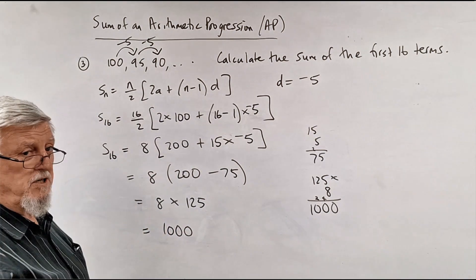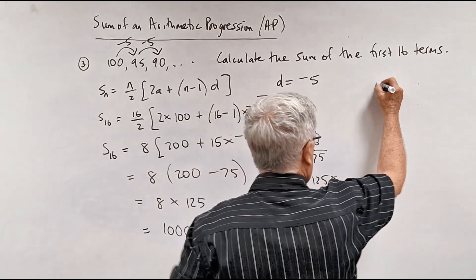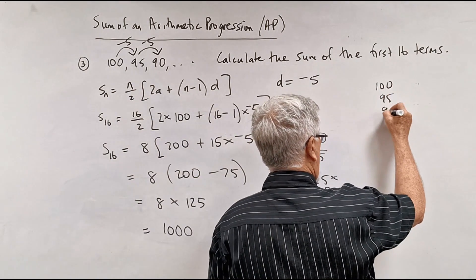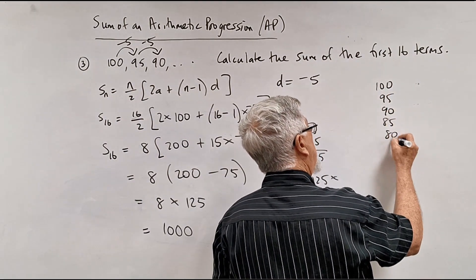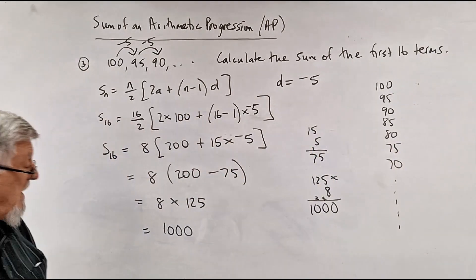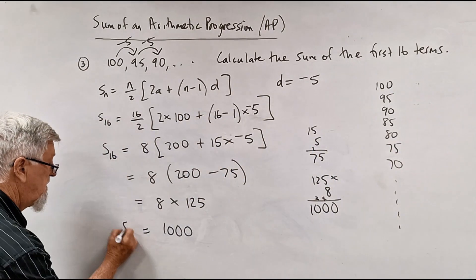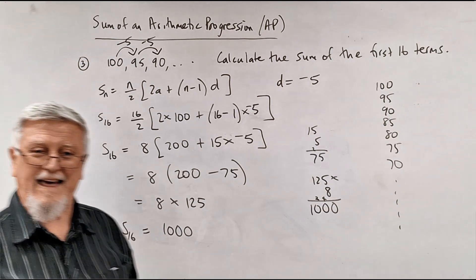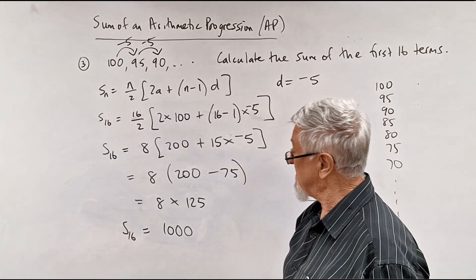And we've actually got a sum of 1,000. So it would be interesting if you actually took the time and you wrote down 100, 95, 90, 85, 80, 75, 70, and you took that down to the 16th number and you added them up. Turns out to be 1,000. I didn't mean to get 1,000 on purpose, but it's nice that it worked out to be.